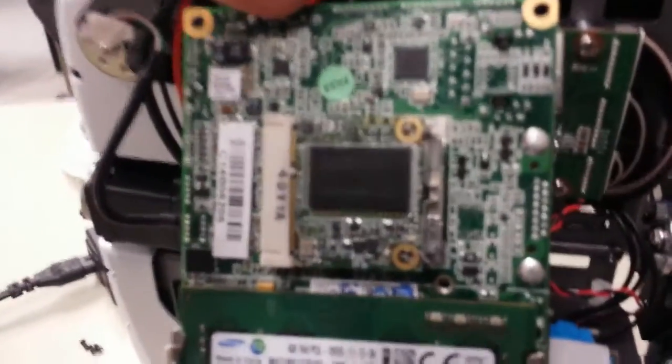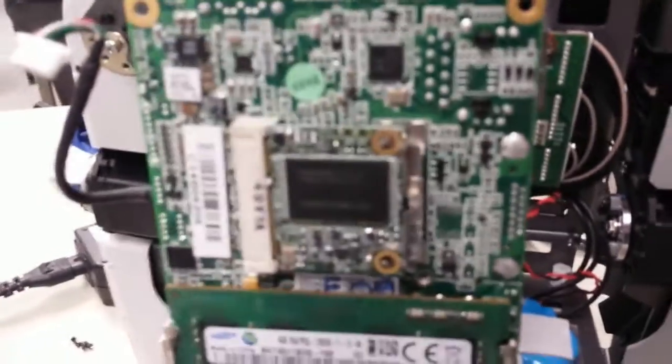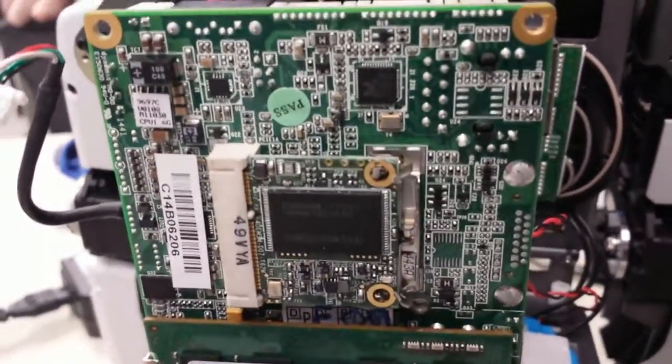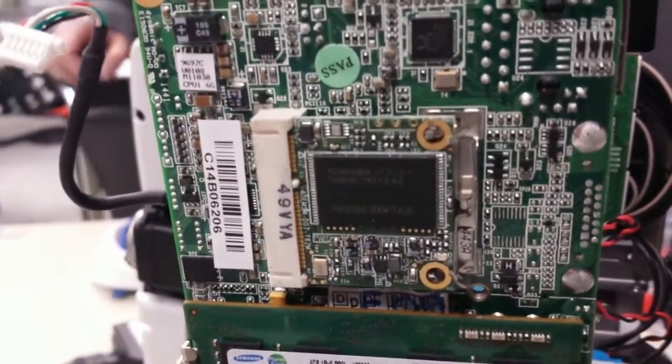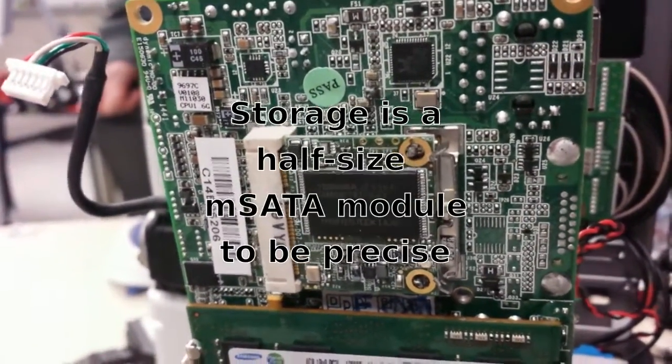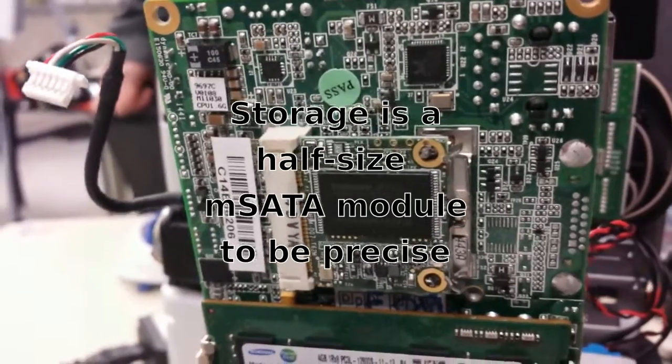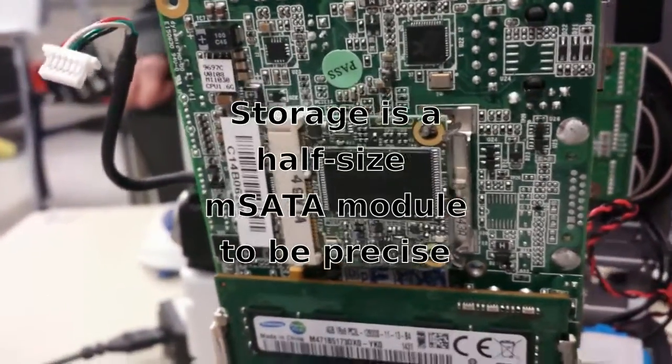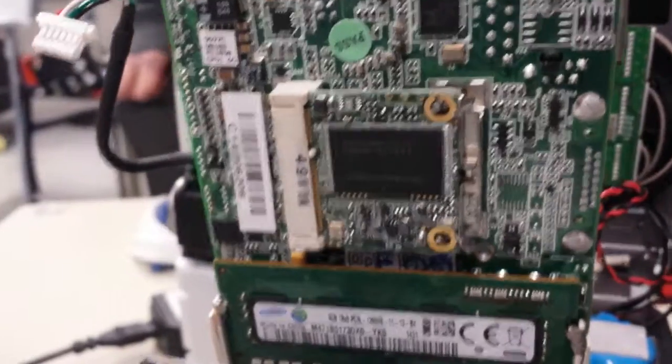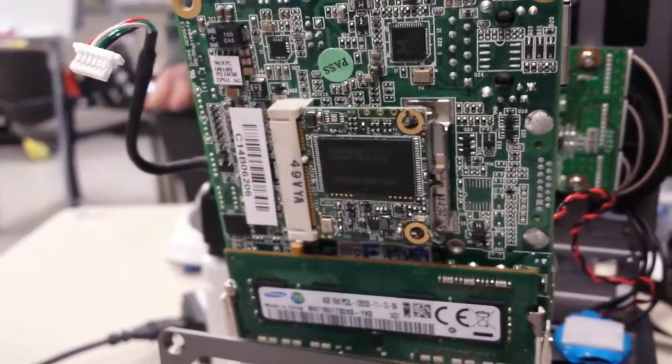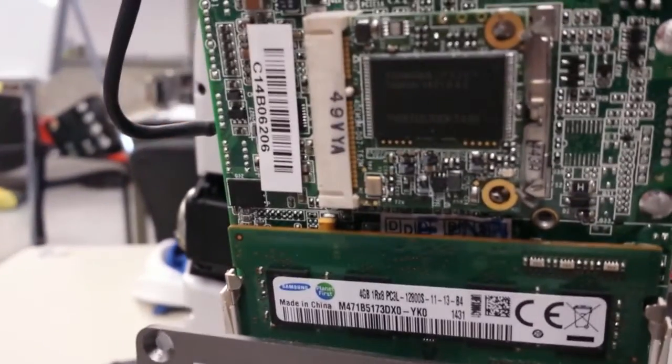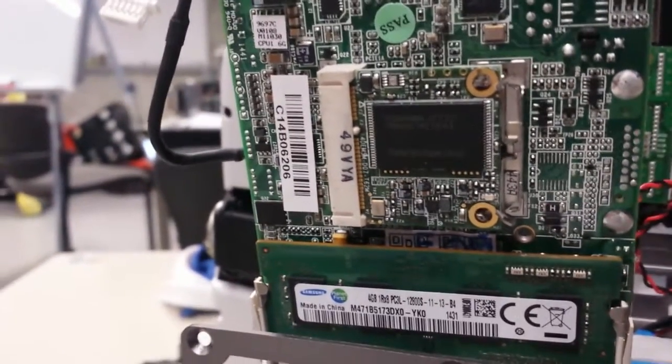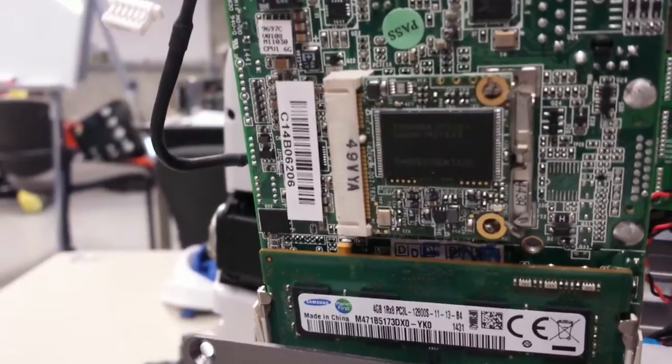And over here, we have a user-replaceable solid-state drive. So unlike the original Darwin where everything was soldered on, and if you burned out the flash, then you were pretty much history, here we have much more user-maintainable and upgradable parts. I don't know what the storage capacity on this drive is. I'll look it up and put it in the video description. And just for comparison,